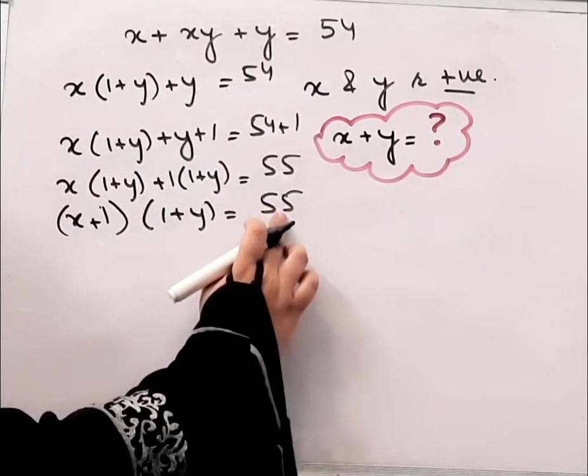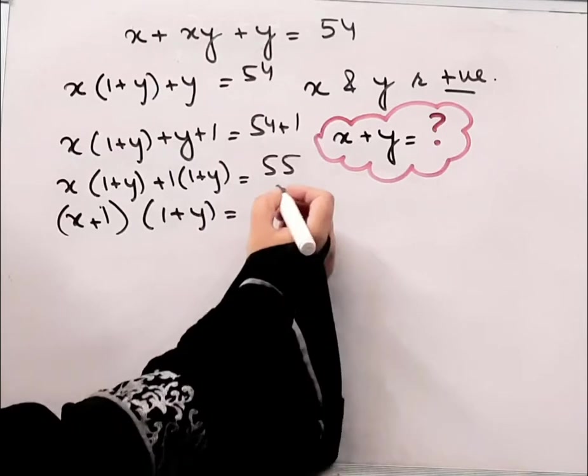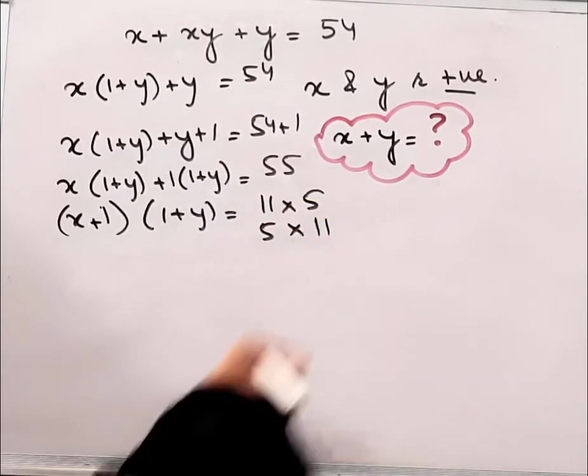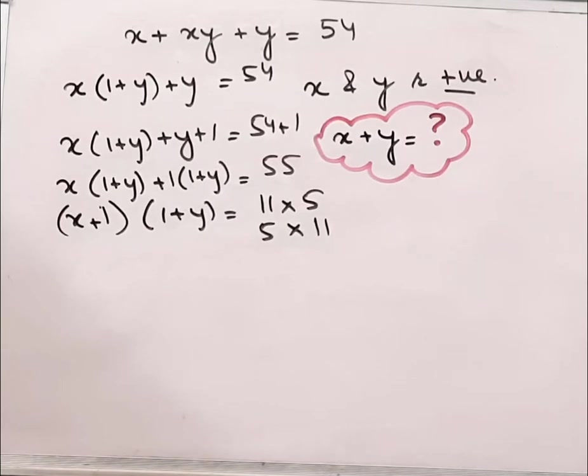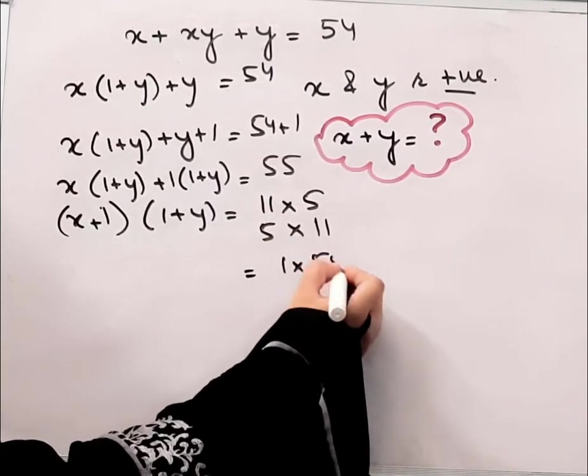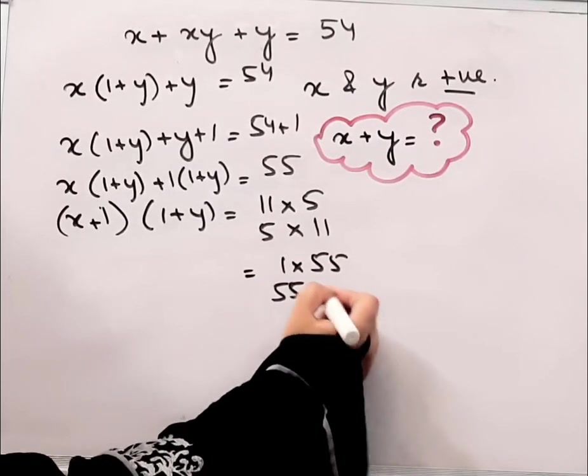What are the factors of 55? It can be 11 times 5, 5 times 11, and also 1 times 55 and 55 times 1.